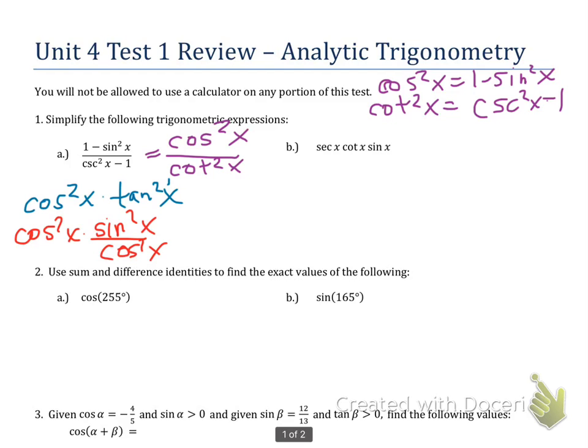And the last step is, since now I have everything in the same terms, or in terms of sine and cosine, and I have fractions that are multiplying, I can cross out what's common.